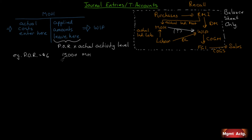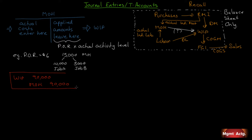Let's say that we have our predetermined overhead rate of $6 and we incurred 15,000 machine hours — 10,000 of them were for Job A, 5,000 were for Job B. So, $6 times 15,000 is $90,000. When we transfer out manufacturing overhead, $90,000 will go into work in process and $90,000 will leave manufacturing overhead. That's the journal entry to transfer amounts from manufacturing overhead into work in process based on an applied amount from our predetermined overhead rate.